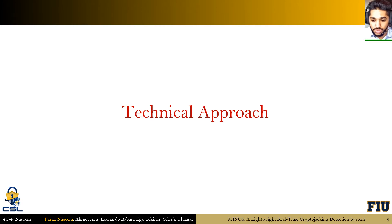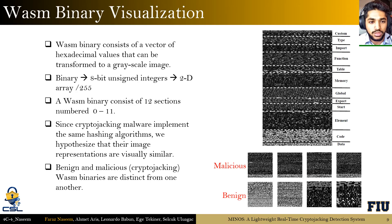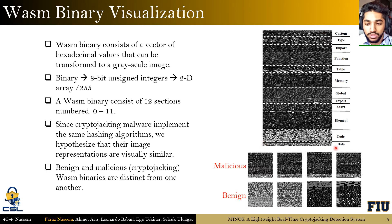Now let's move on to the technical approach of our framework. It is common knowledge in the literature that malware binaries can be converted into grayscale images. Similarly, WebAssembly binaries can also be converted into grayscale images — you can see an example on the right of a converted cryptojacking malware sample binary, with each of the 12 sections of the WebAssembly binary visible. We hypothesize that since cryptojacking malware implements the same hashing algorithms repeatedly, the samples might be semantically and syntactically similar, and as a result their image representations might be similar to each other.